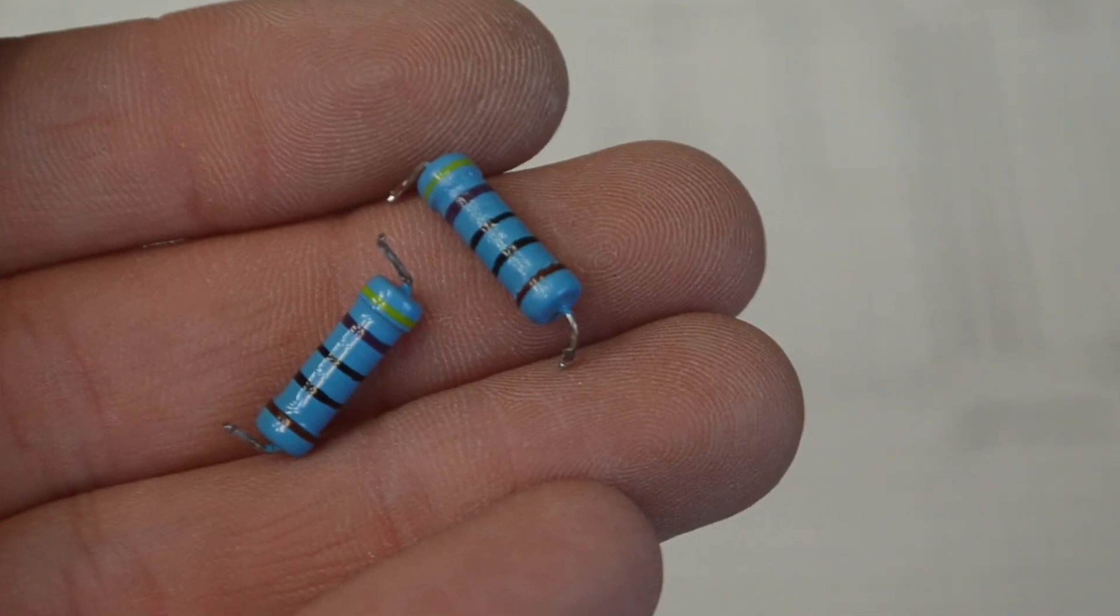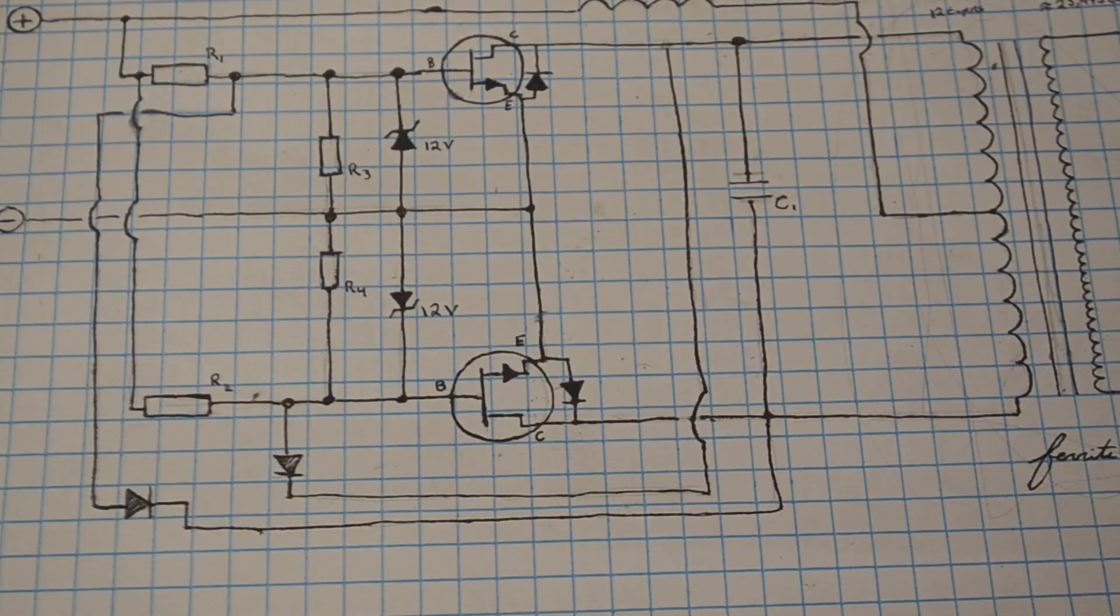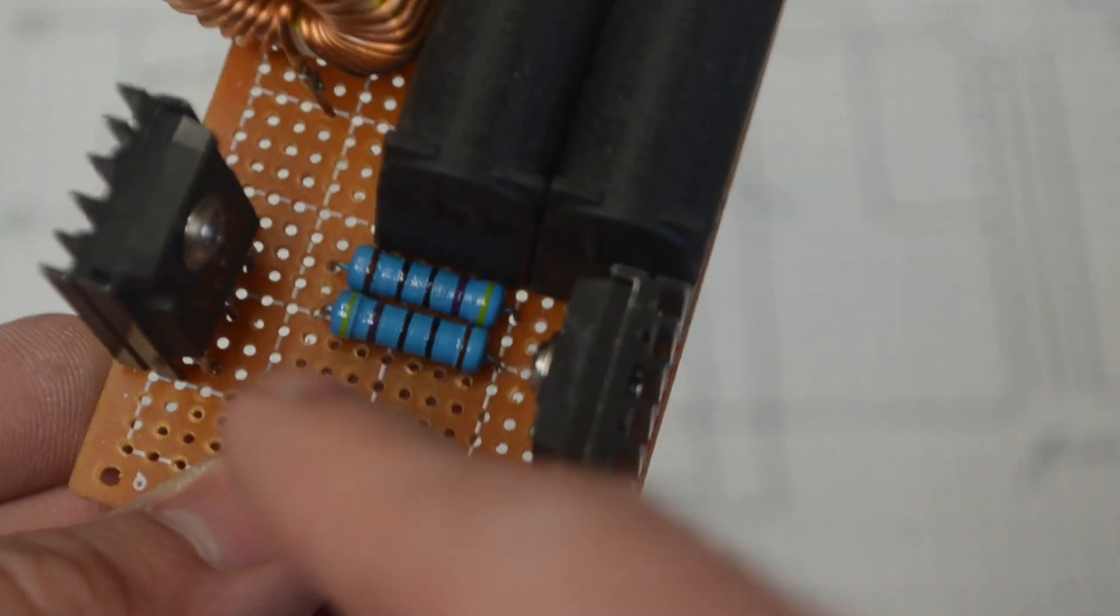Next I have two 470 ohm resistors. These resistors are going to be these two shown here. As you can see they connect up to the gate of each of the MOSFETs. Okay so I inserted those two resistors right here on the perf board.